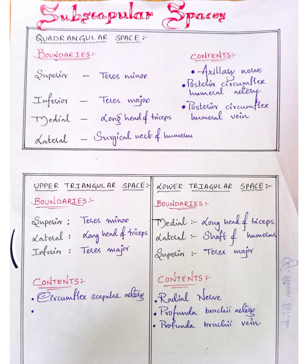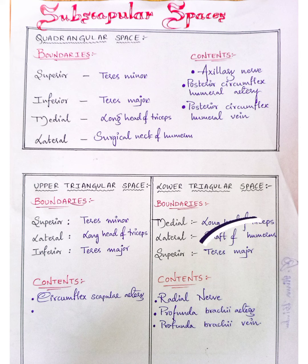The contents of the upper triangular space are the circumflex scapular artery. And the contents of the lower triangular space are the radial nerve and profunda brachii artery and vein.